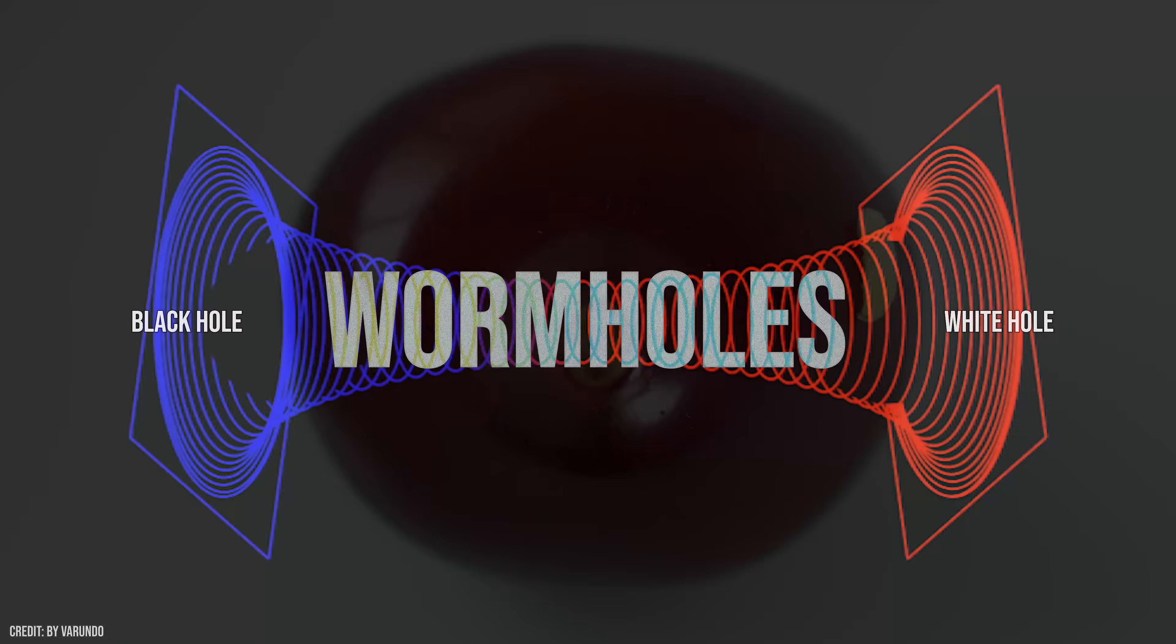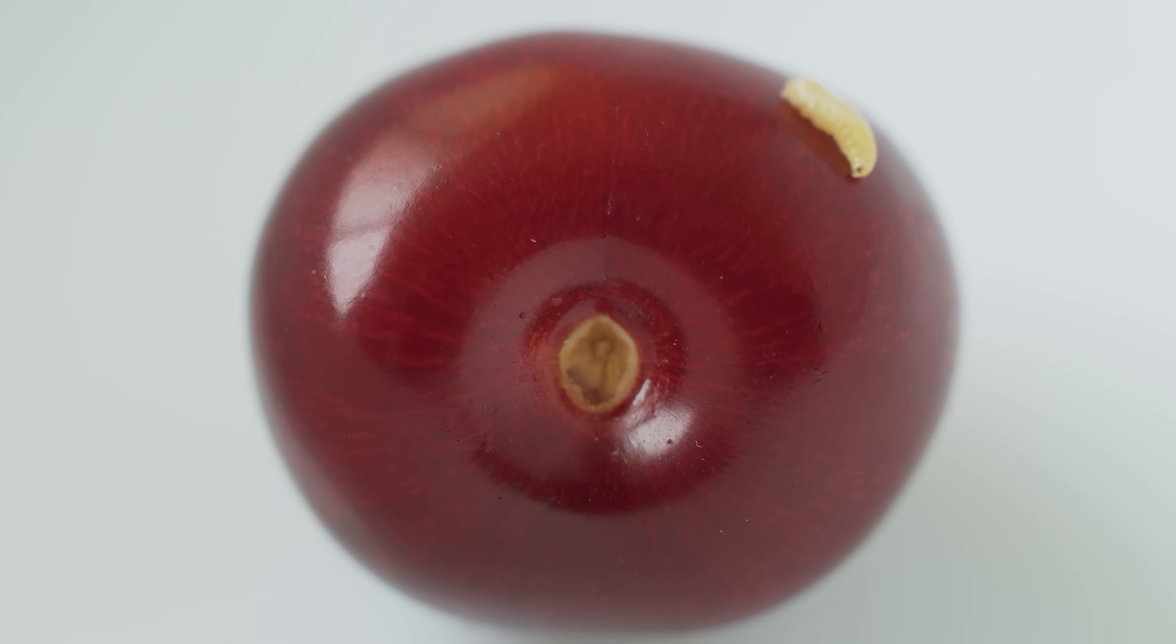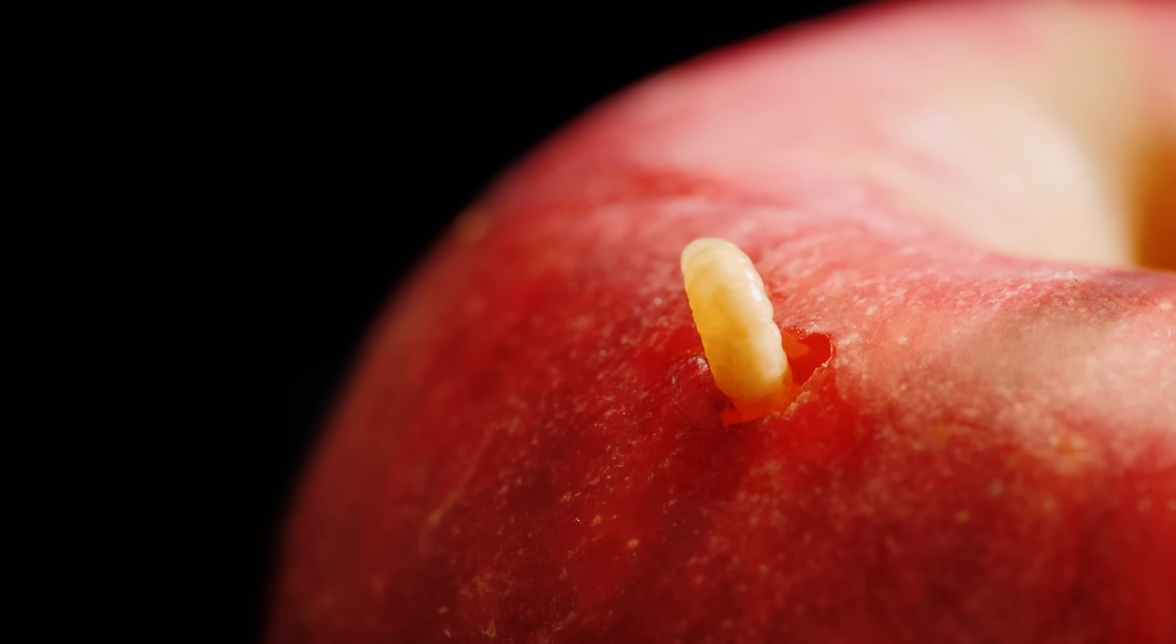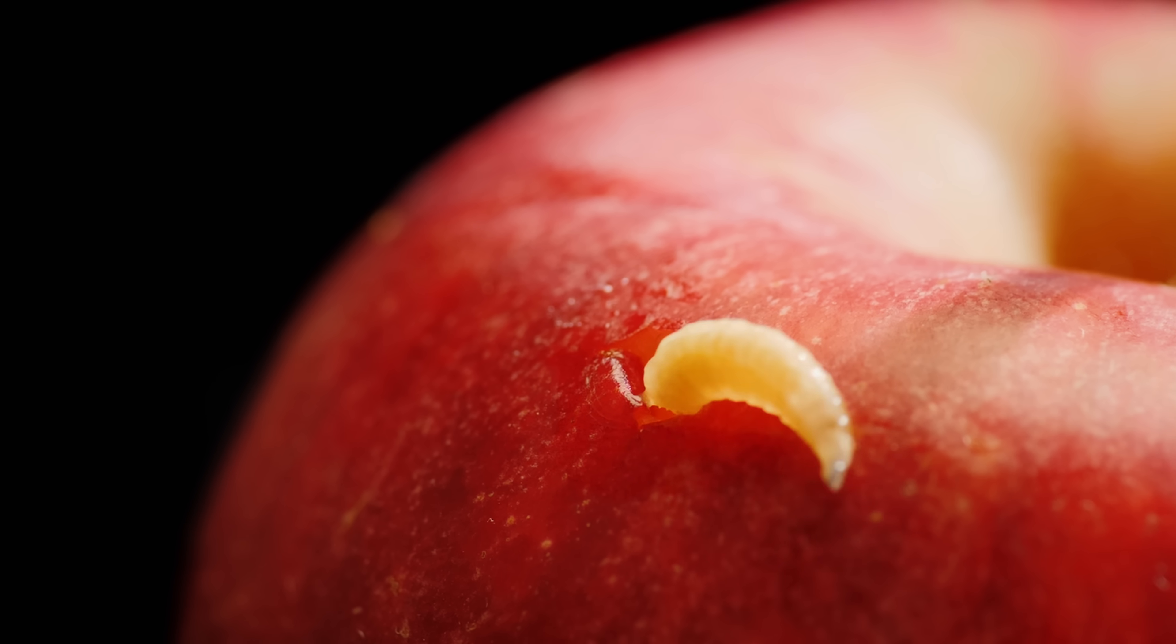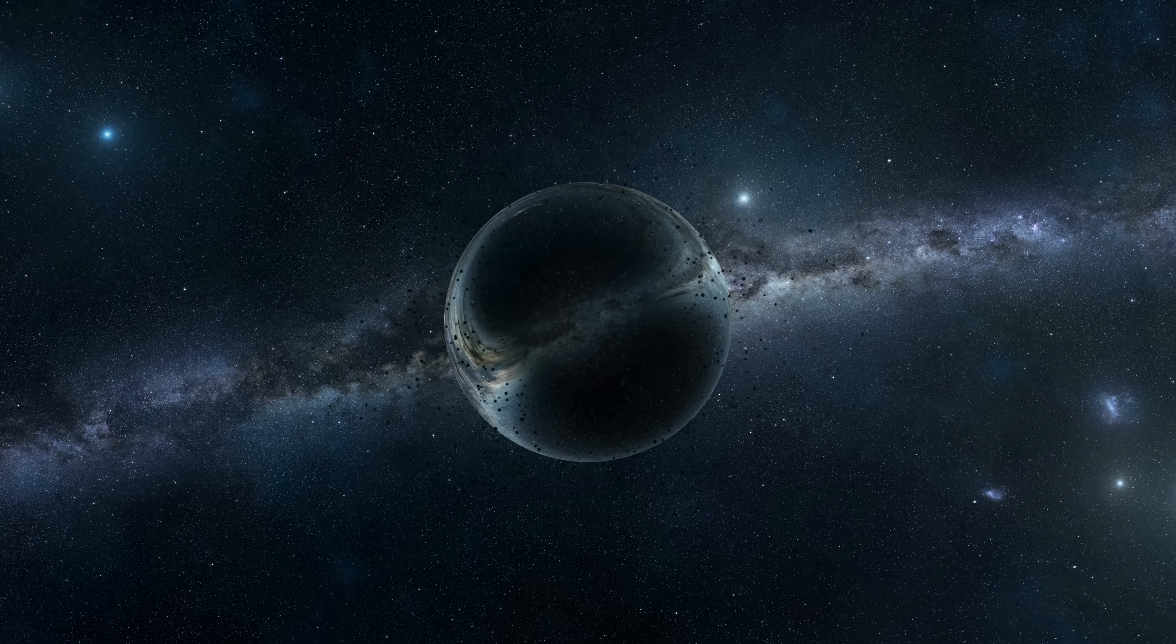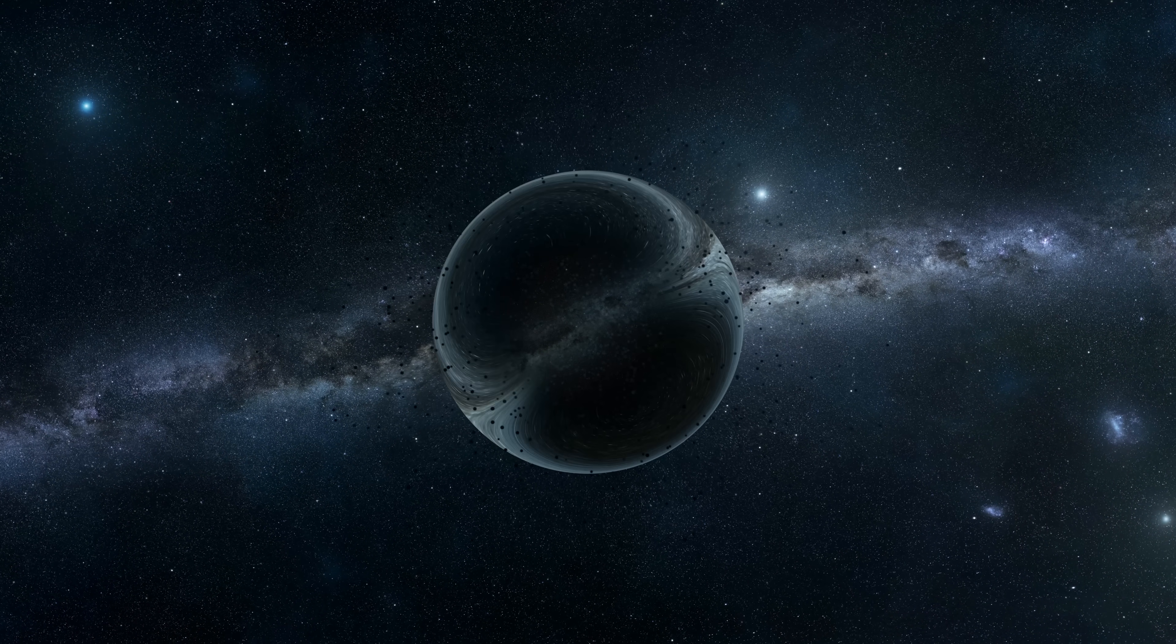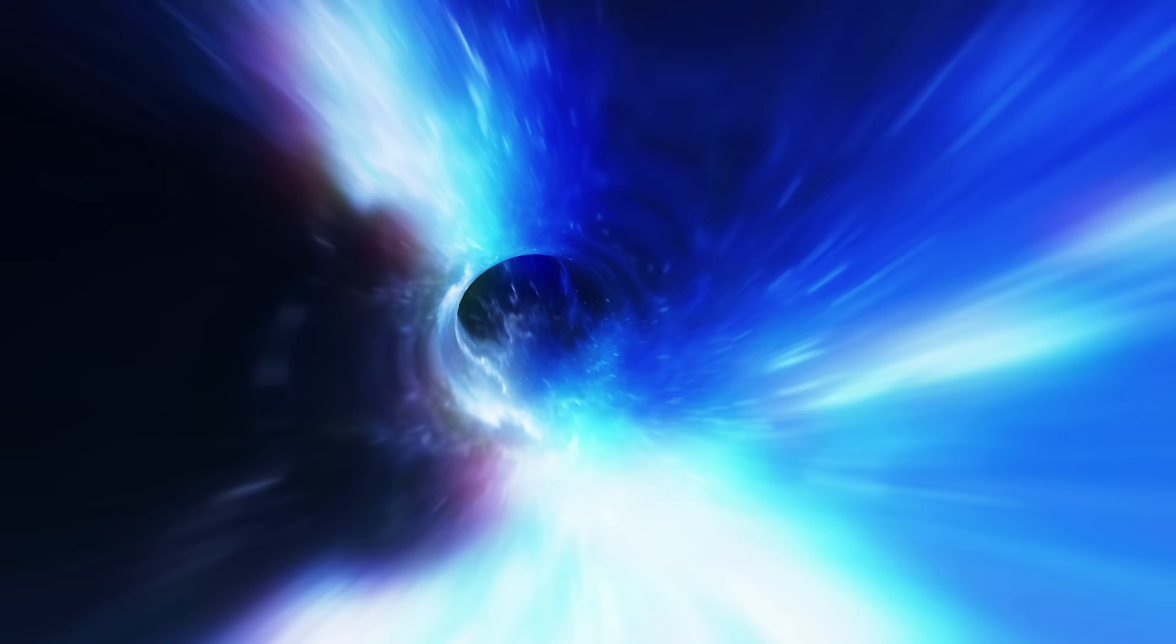Wormholes take their name from the choices facing a worm sitting on top of an apple. If the worm wants to get to the bottom of the apple, it has two options. It either crawls around the outside, or it chews a tunnel through the middle. Such a shortcut would be a literal wormhole. In astronomy, there are several varieties of wormhole, with the Einstein-Rosen bridge the first to be discussed. But before you start daydreaming of using a wormhole to disappear into another universe, wormholes have problems of their own.